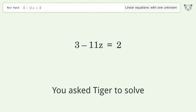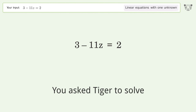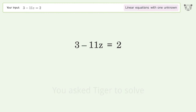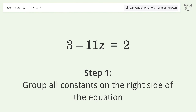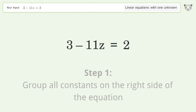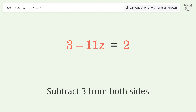You asked Tiger to solve a linear equation with one unknown. The final result is z equals 1 over 11. Let's solve it step by step. Group all constants on the right side of the equation — subtract 3 from both sides.